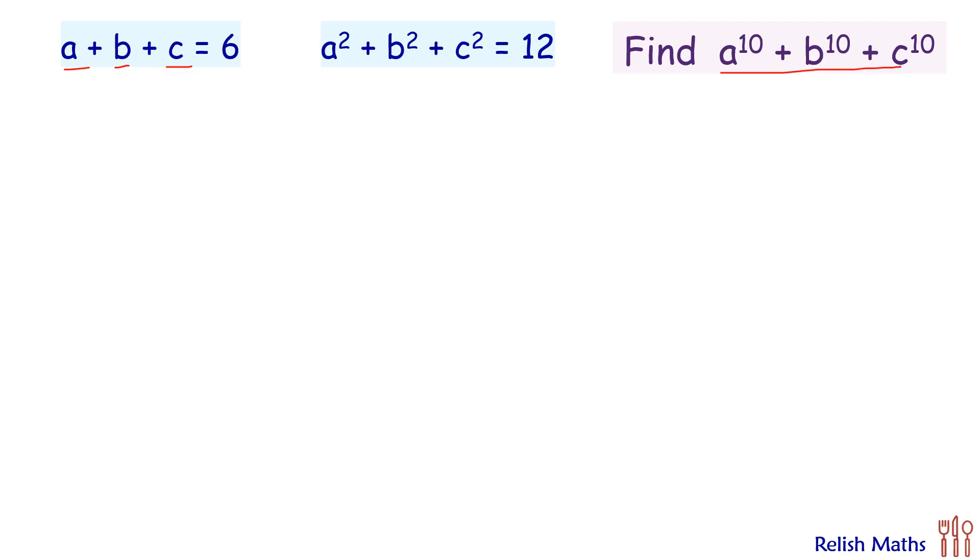So here, let's start by squaring the first equation on both sides and let's open up the bracket. In the left-hand side, if we see, a squared plus b squared plus c squared is here and its value is 12. So let's replace this value by 12.